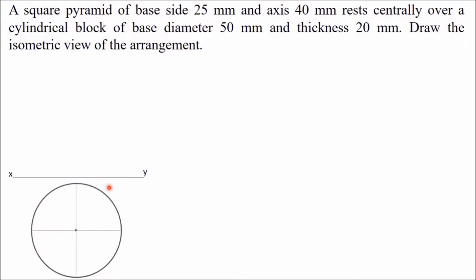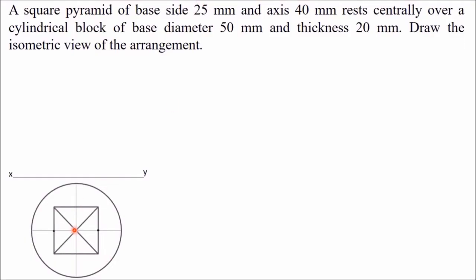Over this cylinder we have the pyramid of base side 25 mm, so in the top view the pyramid will appear as a square with side length 25 mm. Mark two points on each side of the center point at 12.5 mm each side, giving a total length of 25 mm. From these points draw vertical lines to complete the square. Now join the corner points to the center — this center point is the apex of the square pyramid and these sides are the slant edges.